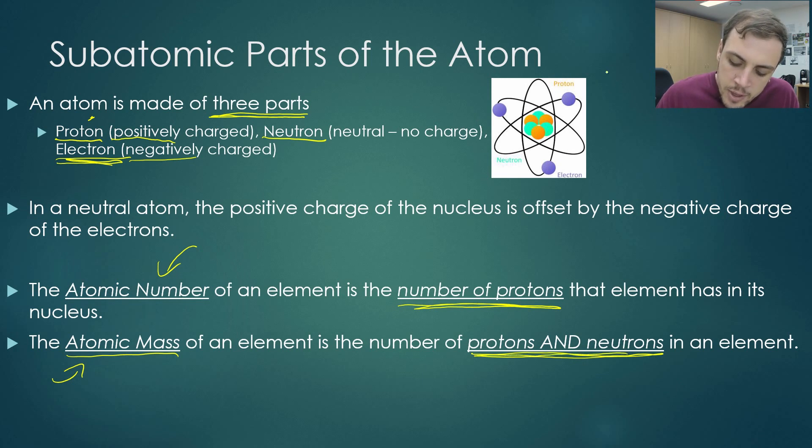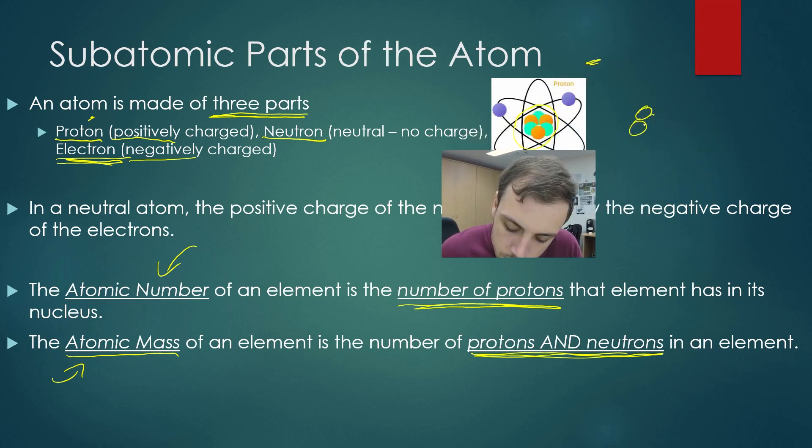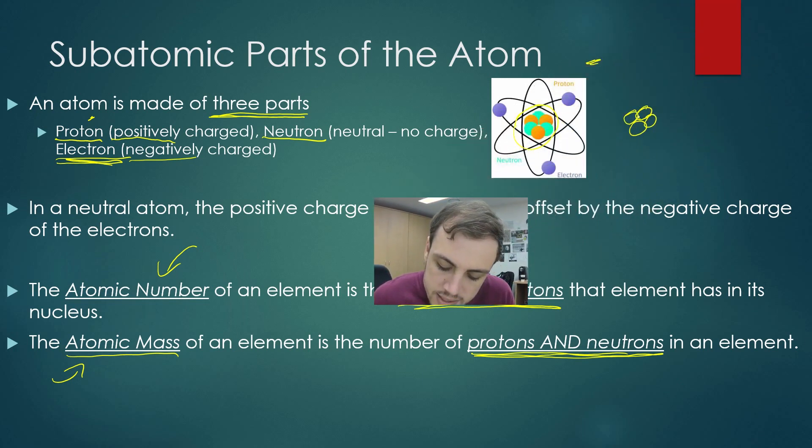The atomic mass of an element is the number of protons and neutrons. So we can see here that we have our sort of very crudely animated atom. So in the center here, I'm just going to redraw that for you. This is called the nucleus. It is the center part of the atom.